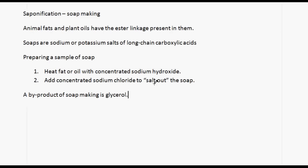The process of soap making is called saponification. Animal fats and plant oils have the ester linkage present in them. Soaps are sodium or potassium salts of long-chain carboxylic acids. To prepare a sample of soap, you heat a fat or oil with concentrated sodium hydroxide. Concentrated sodium chloride is then added to salt out the soap. A by-product of soap making is glycerol.